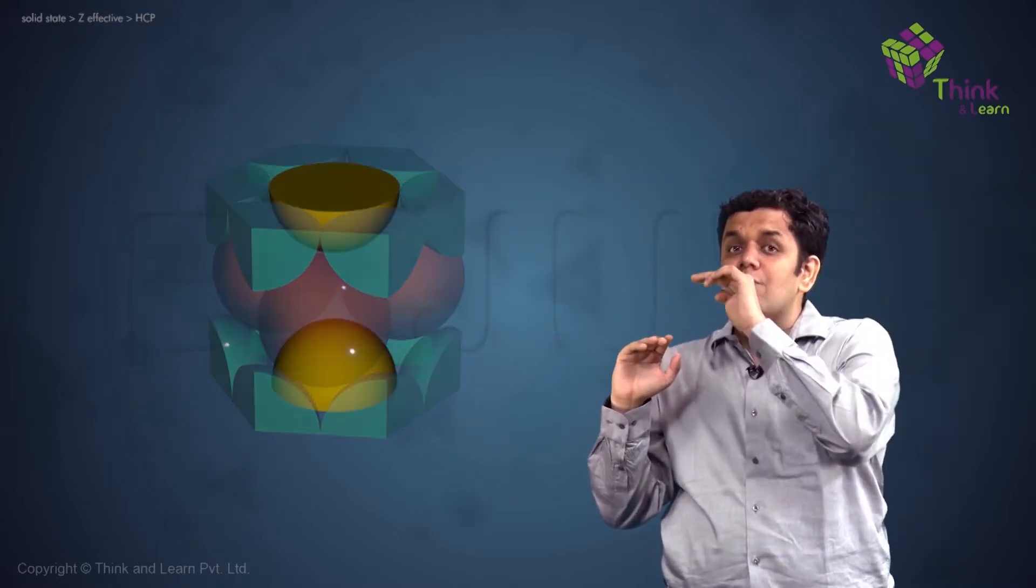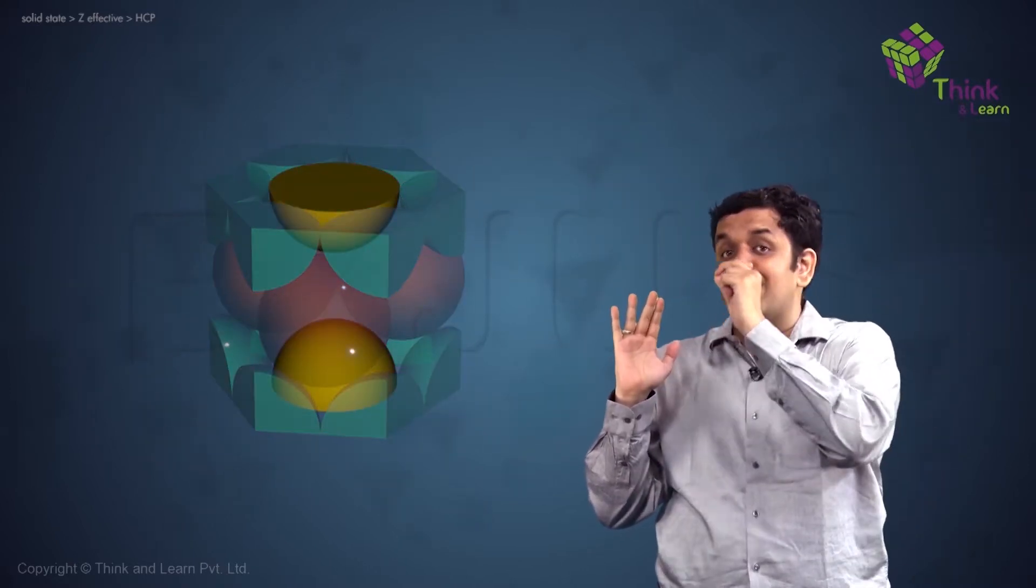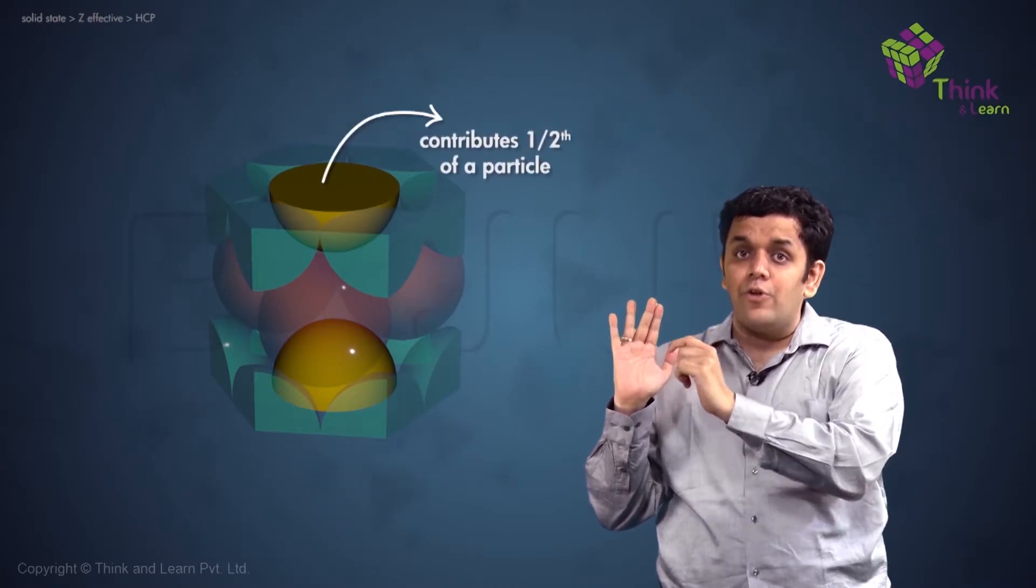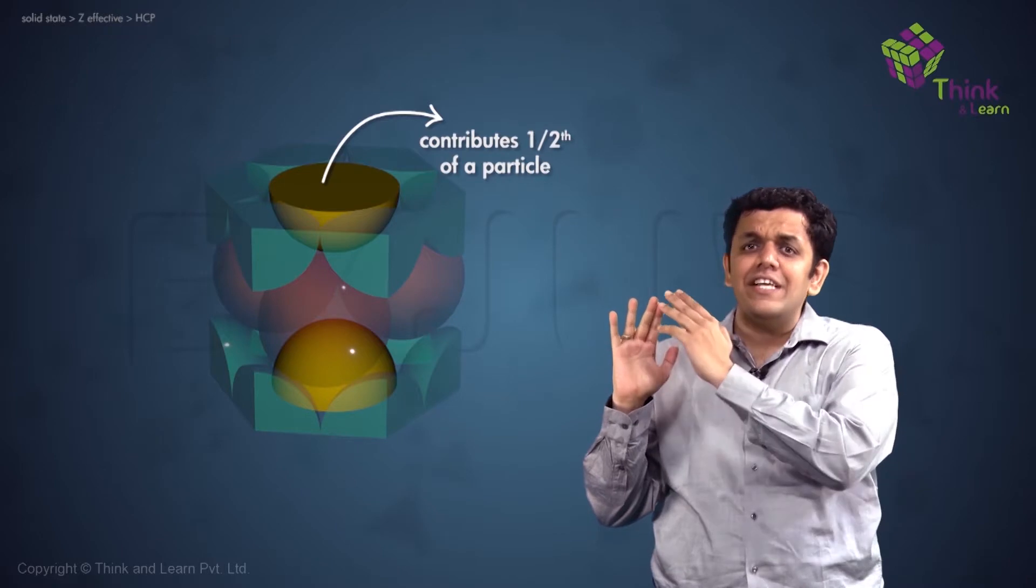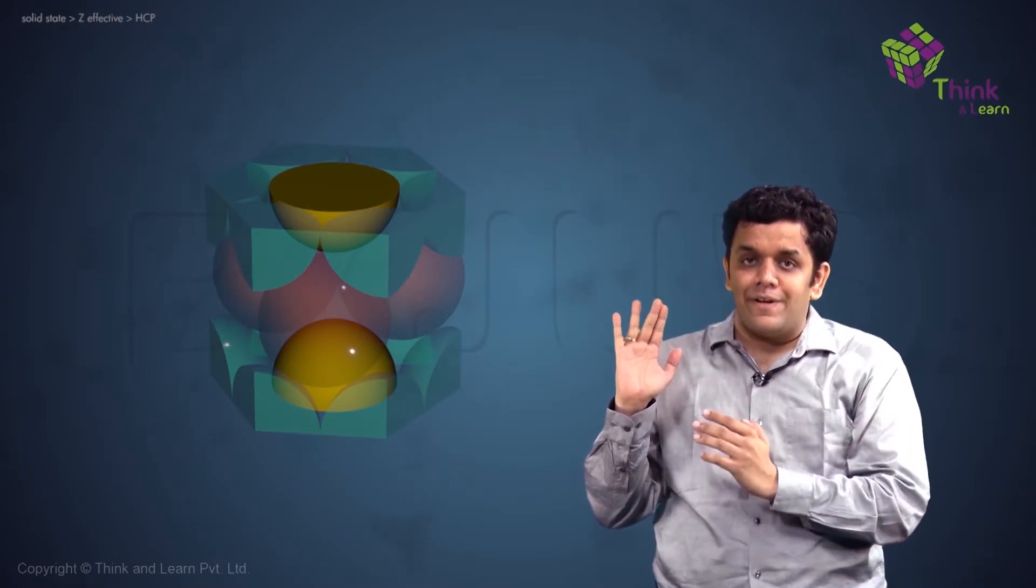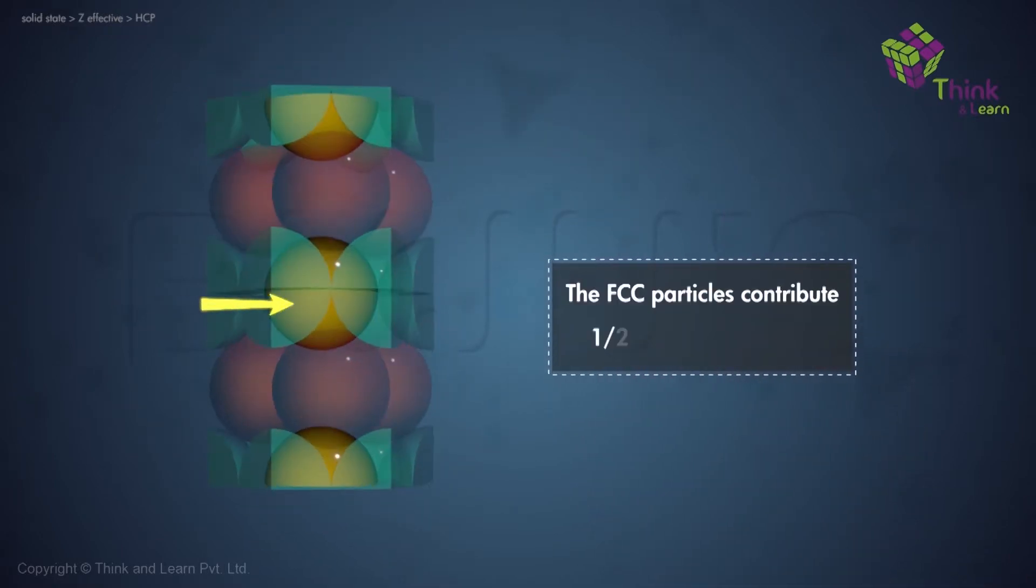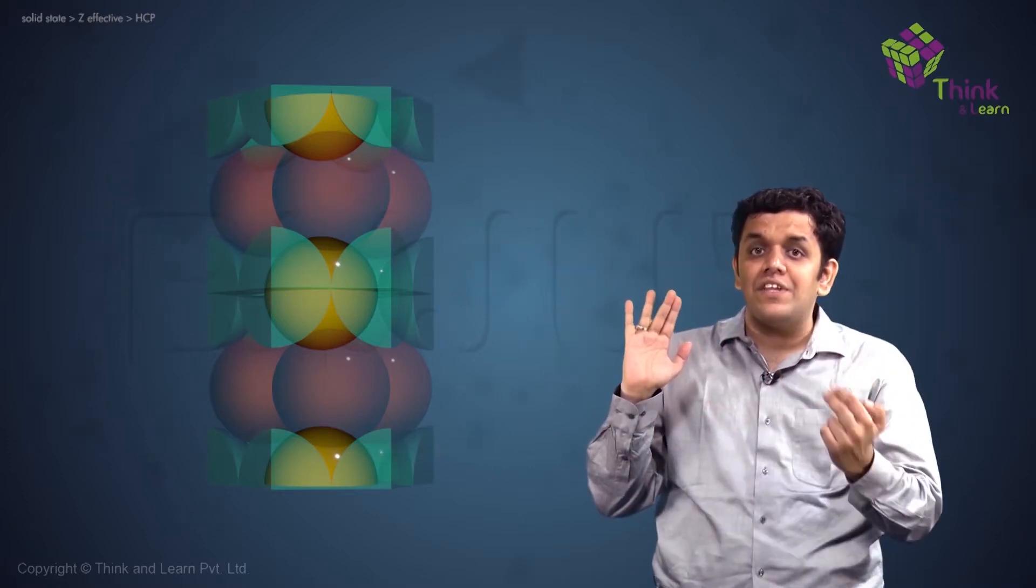Now let us look at the center of the hexagon. The particle located at the center of the hexagon will contribute half towards unit cell U1. Why? This is very similar to the FCC concept. So here you go, half from here and half from the bottom. So again, this contributes to one more particle. So two plus one, three.